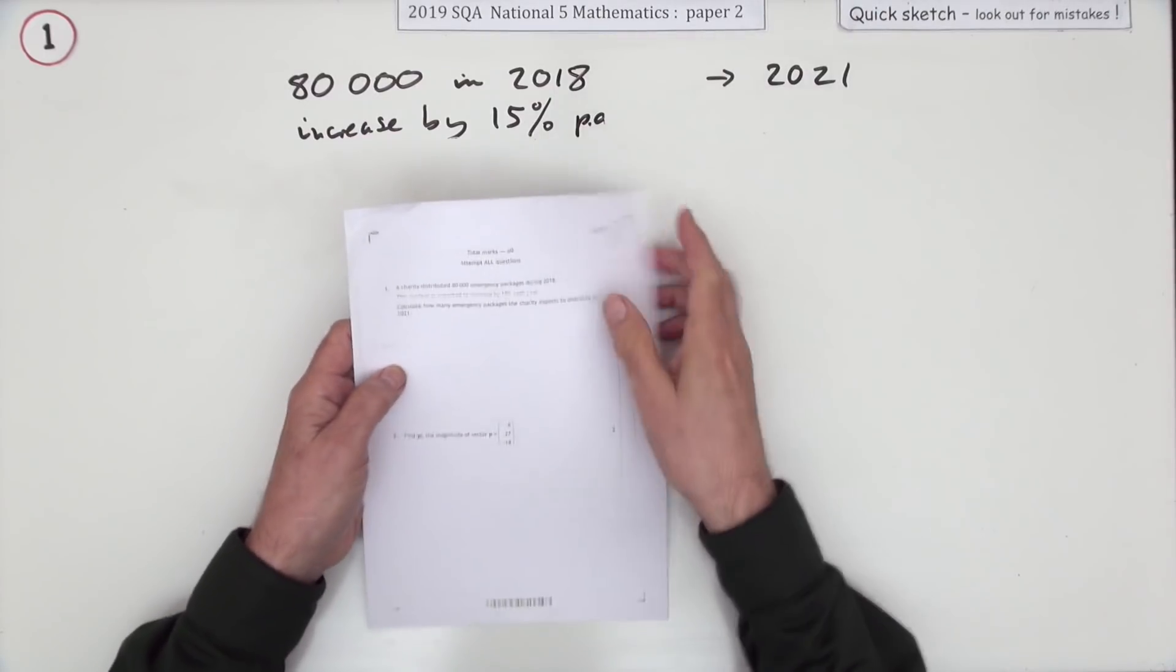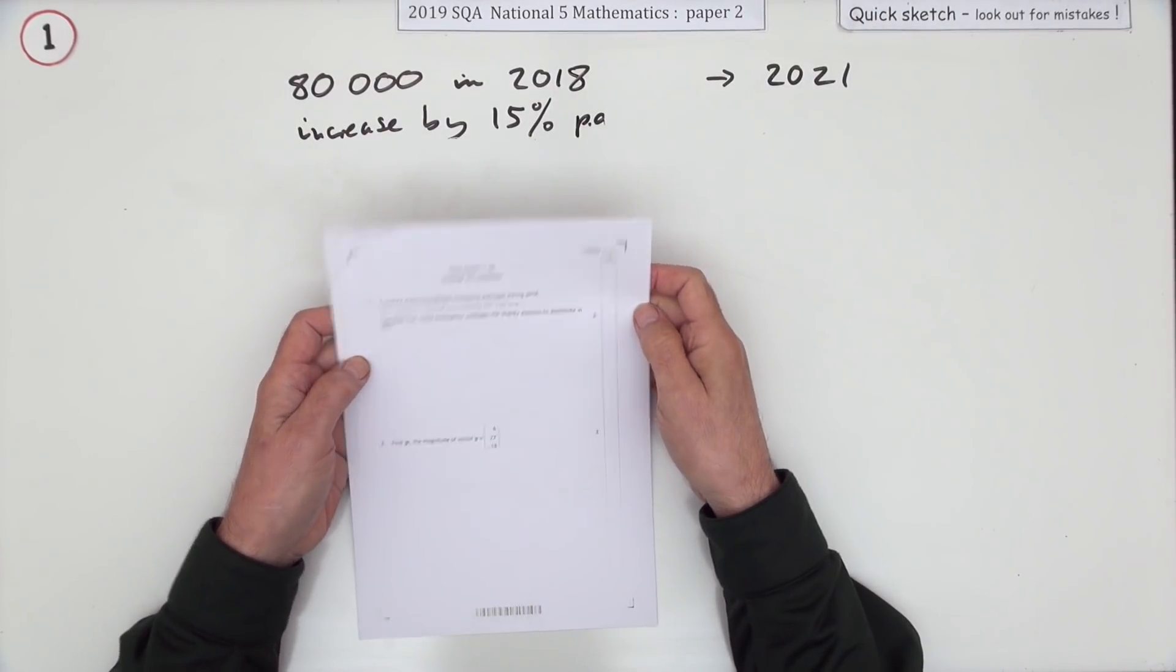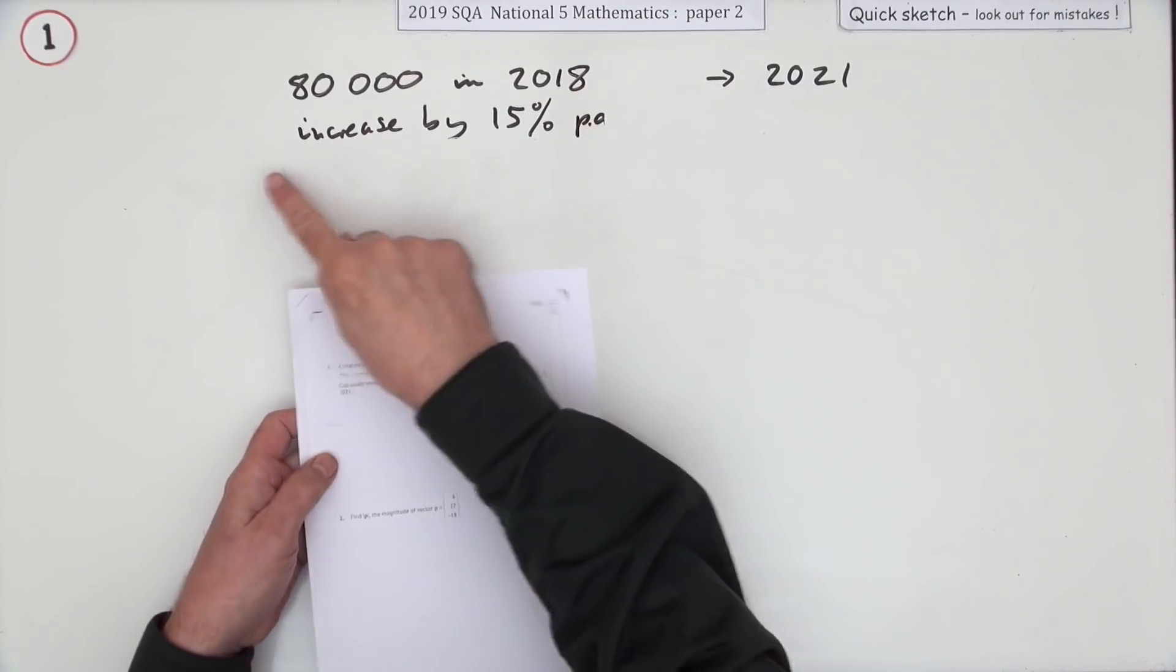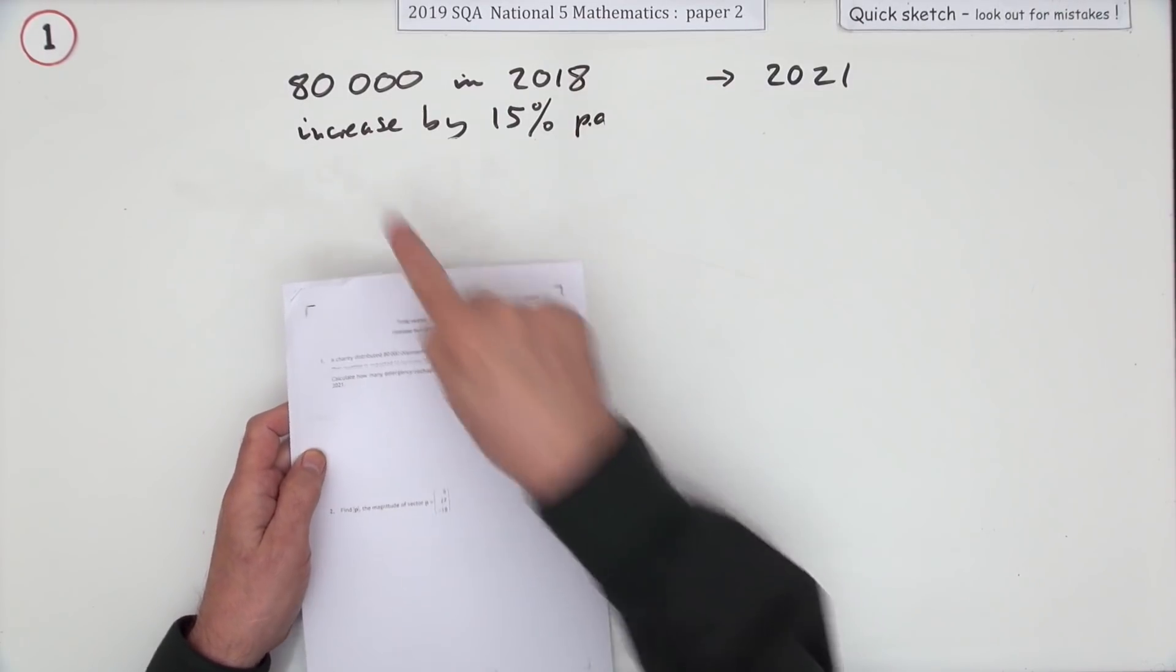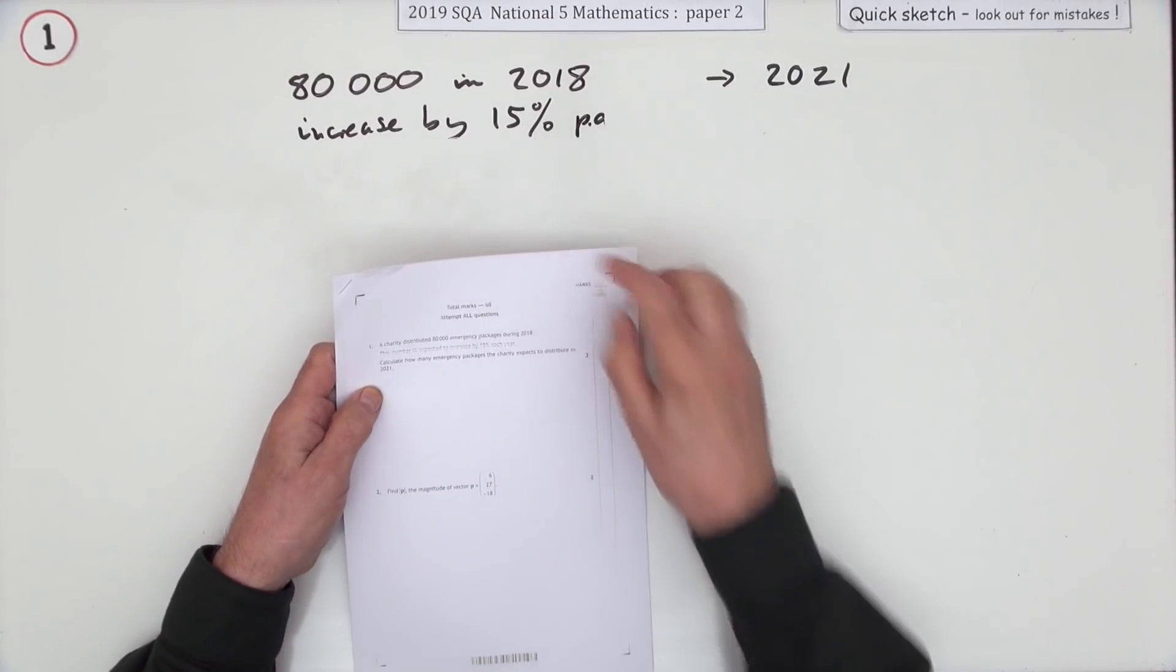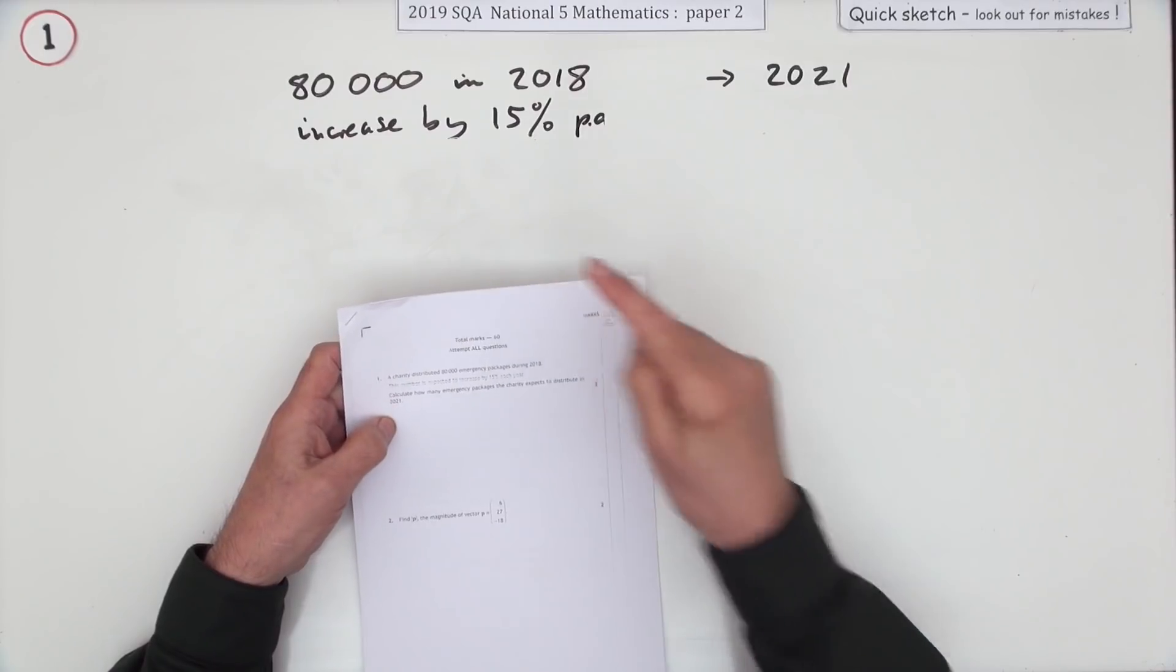Number one, the first question in paper two of the 2019 National 5: compound percentages. It says a charity distributed 80,000 packages in 2018, and that's expected to rise by 15% a year. If that's the case, how many would you expect to distribute in 2021?